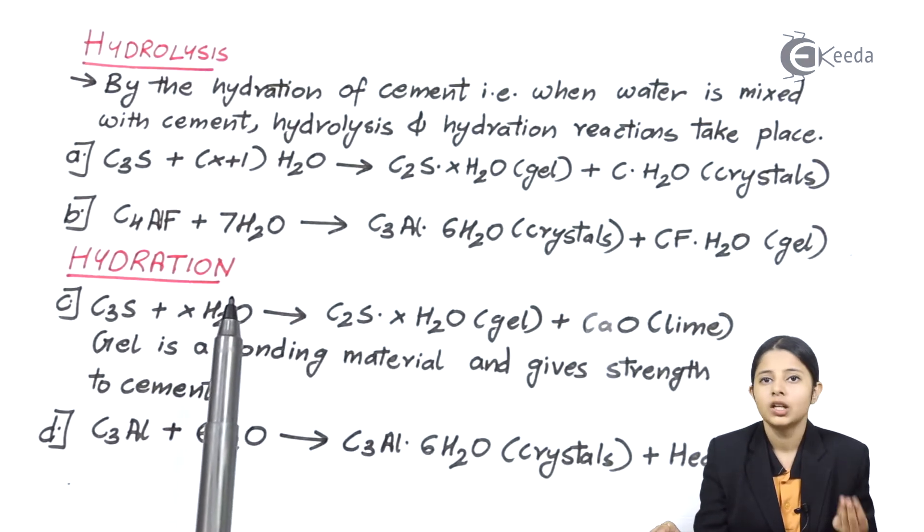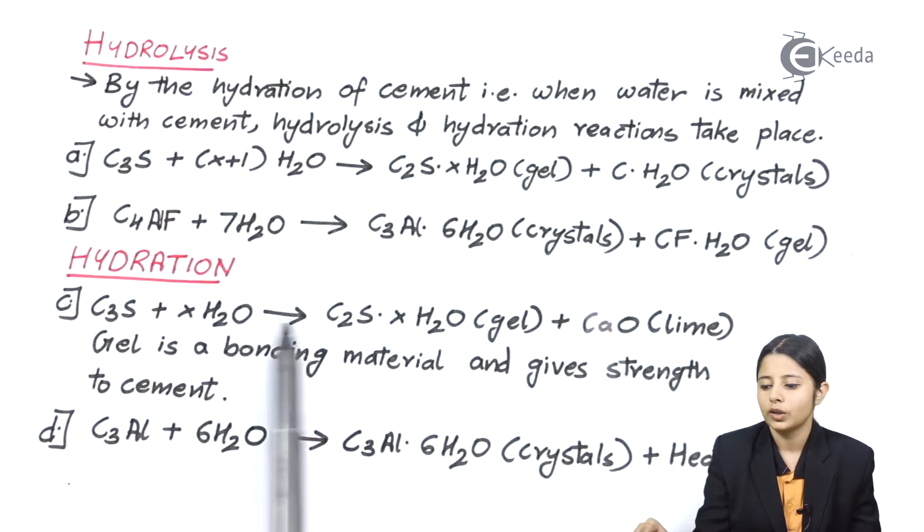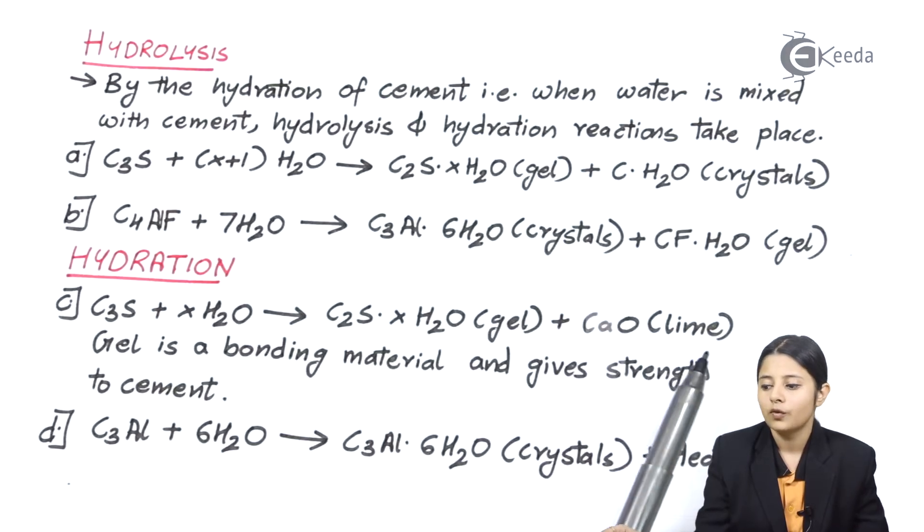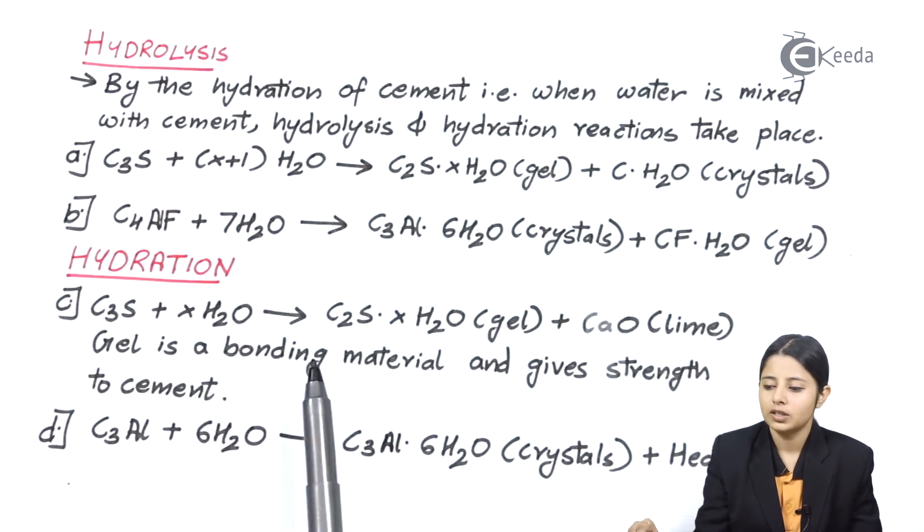It forms C2S·XH2O which is in gel form plus CaO (lime) which is in crystal form. The gel is bonding material and gives strength to cement. CaO lime is one of the most major constituents of any cement.